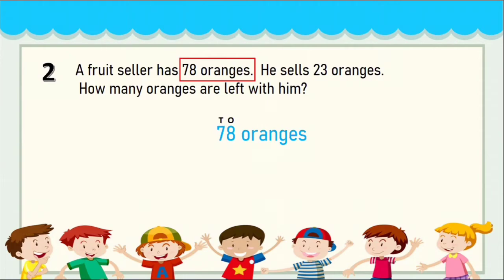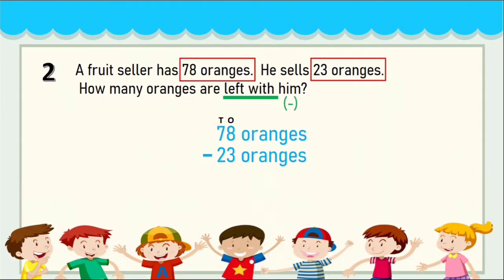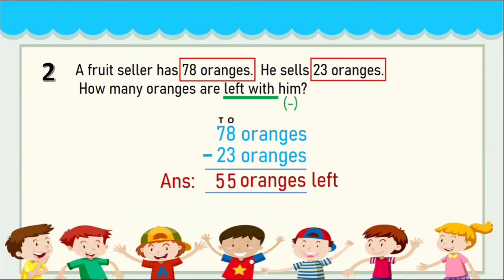He sells 23 oranges, so out of 78 he sells 23 — the number of oranges will be reduced. 'Left' means minus, so put the minus sign and write the answer. Subtract 3 from 8 to get 5, then subtract 2 from 7 to get 5. The answer is 55 oranges left.